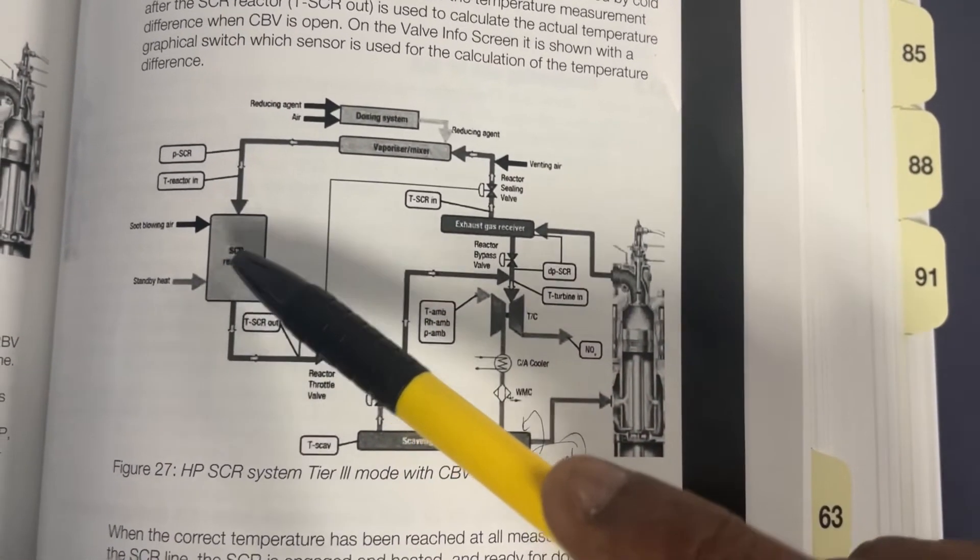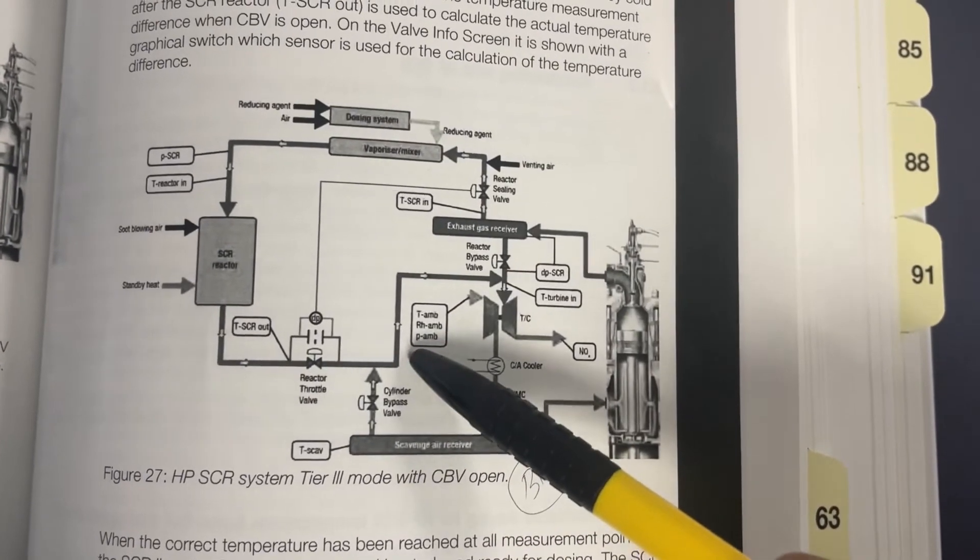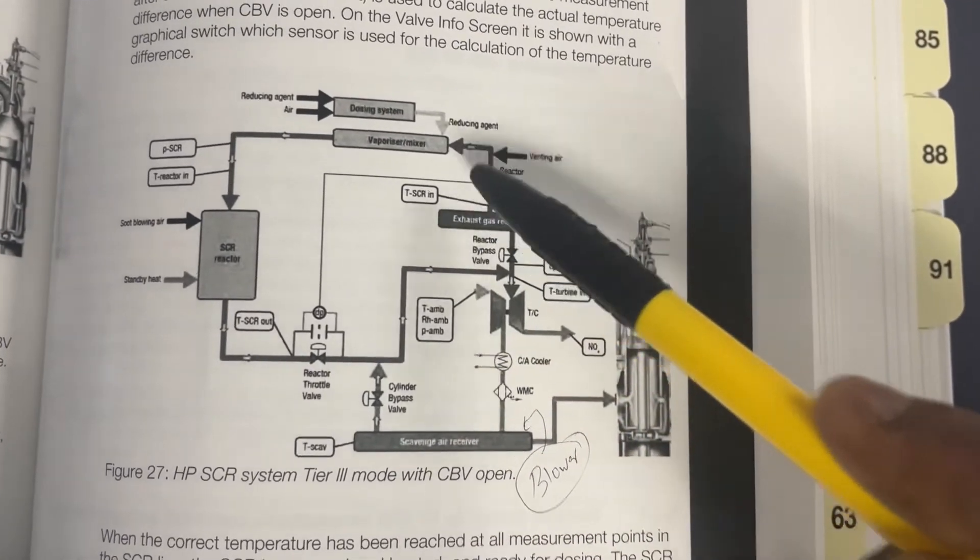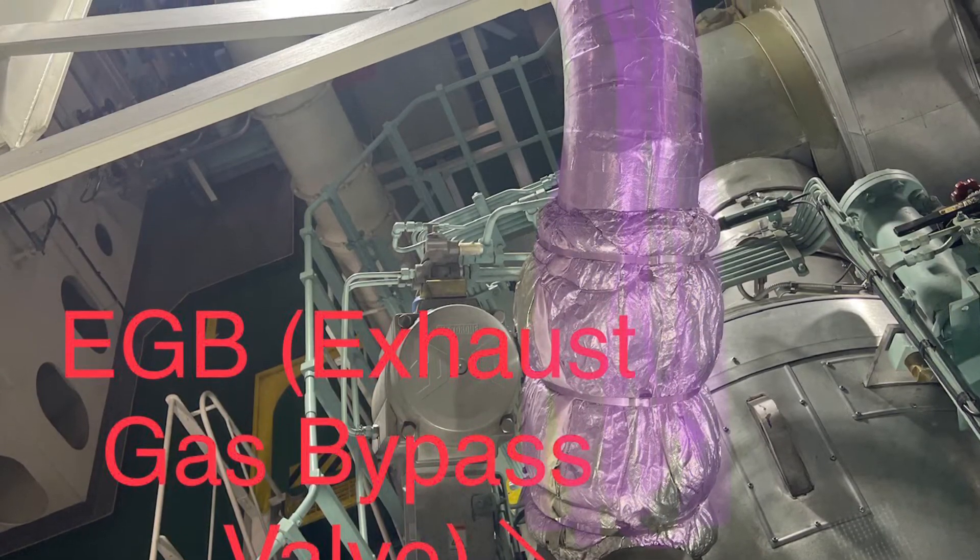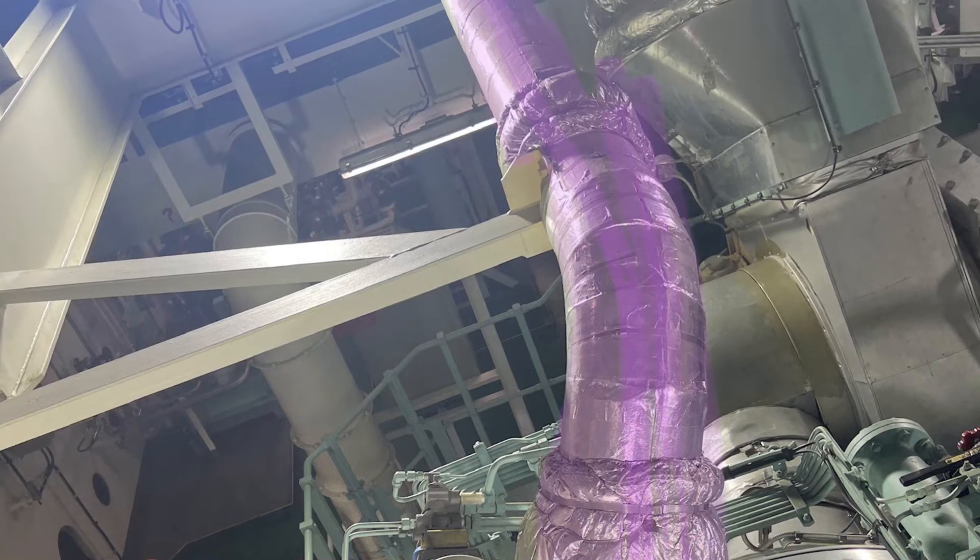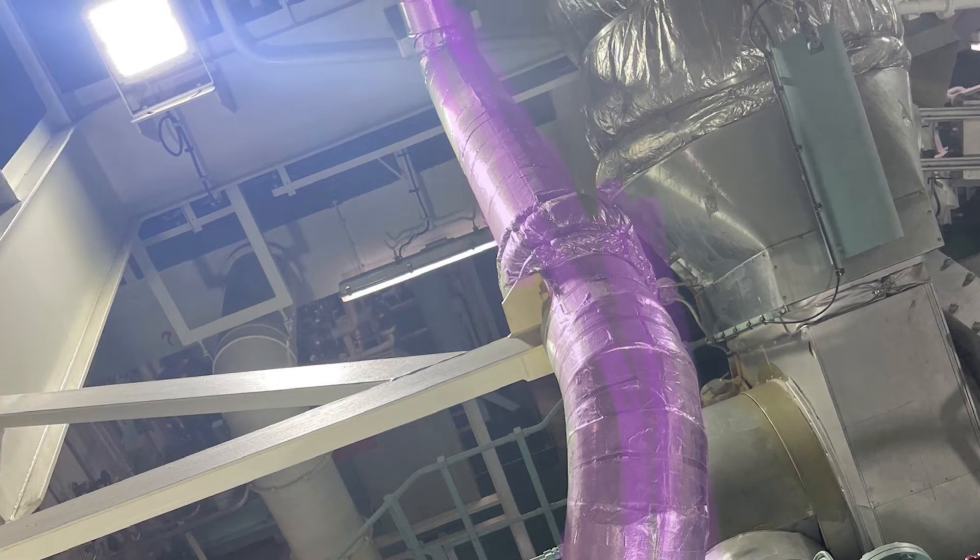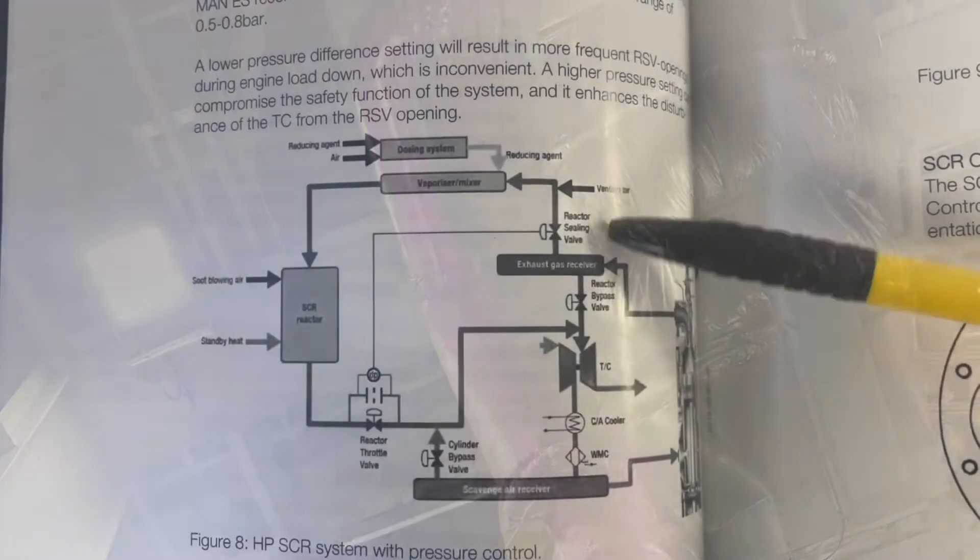The last one is EGB, the exhaust gas bypass valve. When this valve opens, the exhaust gas will bypass the turbocharger from the exhaust gas receiver. When the RSV opens in case of excessive pressure in the SCR line, a mass flow of air from the SCR will expand in the exhaust gas receiver.